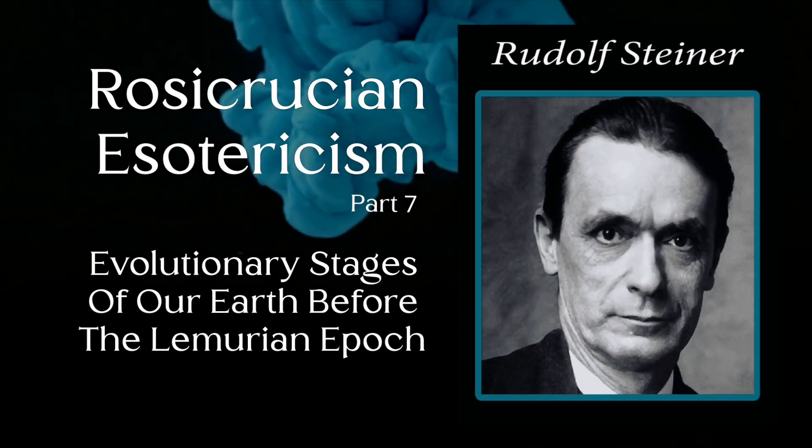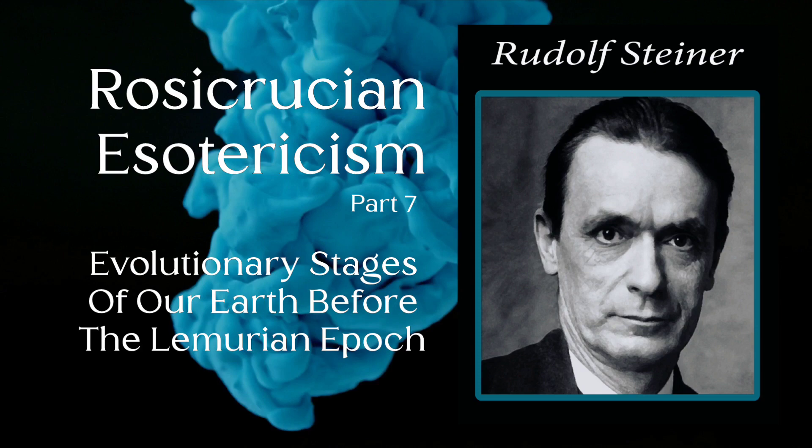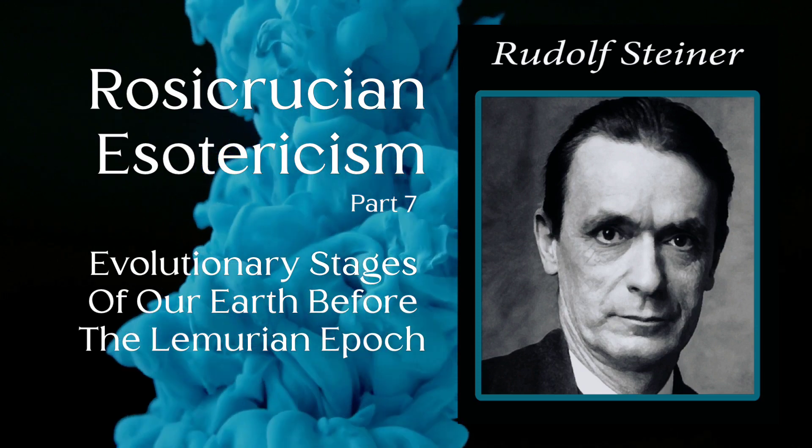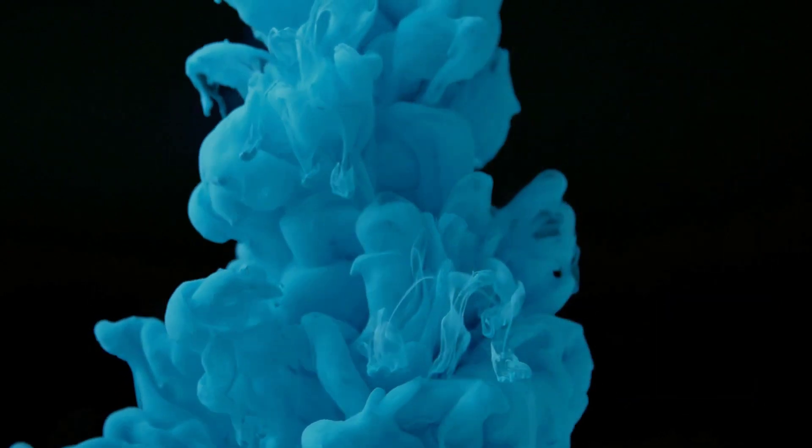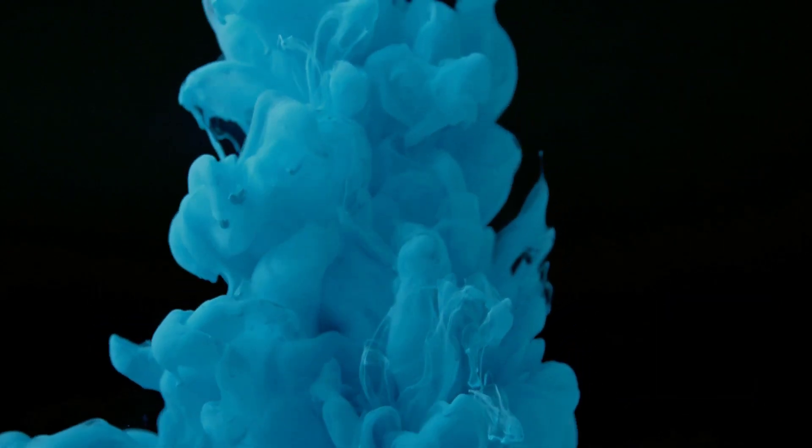This is Lecture 7 of the lecture cycle by Rudolf Steiner, Rosicrucian Esotericism, given in Budapest in 1909. Lecture 7: Evolutionary Stages of Our Earth Before the Lemurian Epoch.